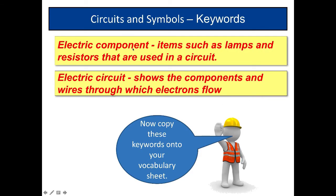A couple of key words for you. First of all, electric component. These are items such as lamps and resistors that are used in a circuit. So we looked at symbols for a number of components: cells, batteries, ammeters, voltmeters. They're all components.